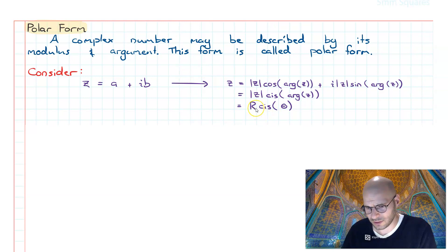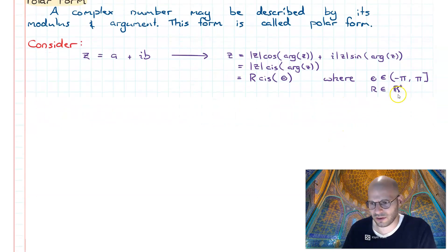We have what's seen as R and theta, where the domain of theta is between negative pi and pi, and the big R is all positive real numbers. So we never have zero for this number and we never have a negative. It's always positive real numbers.